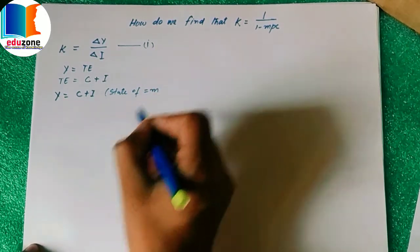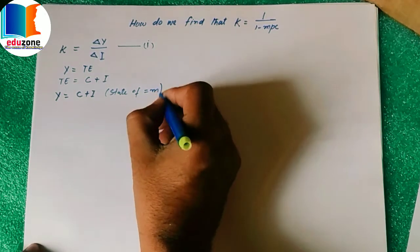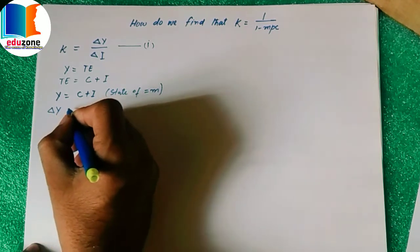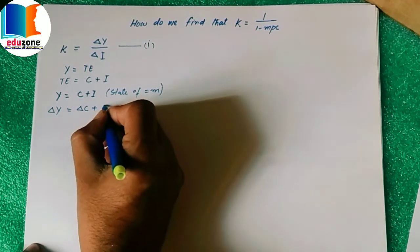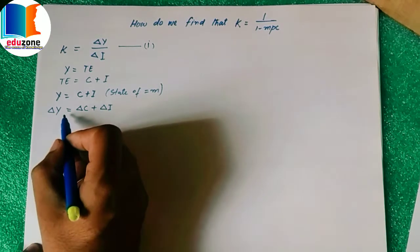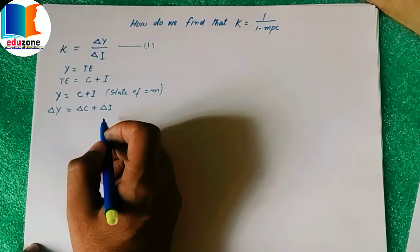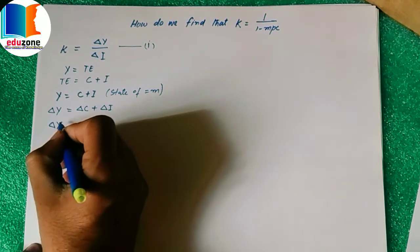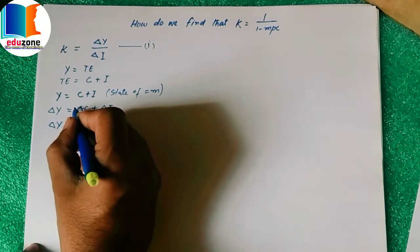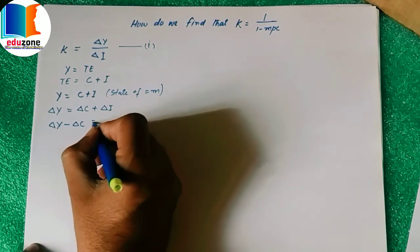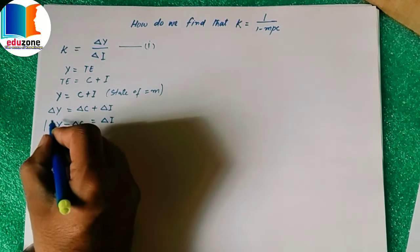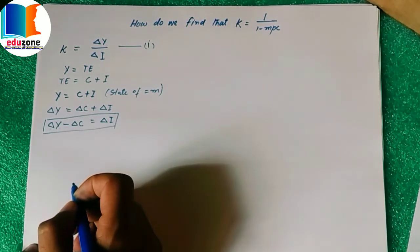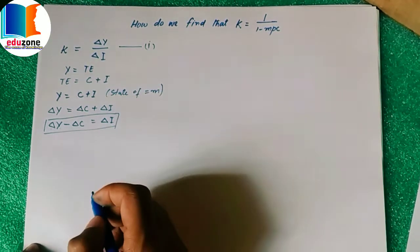This equilibrium condition can also be written as ΔY = ΔC + ΔI, meaning change in income equals change in consumption expenditure plus change in investment expenditure. Rearranging, we move ΔC to the other side: ΔY − ΔC = ΔI. So we can say that change in investment equals change in income minus change in consumption.